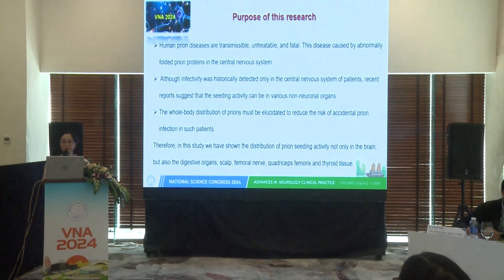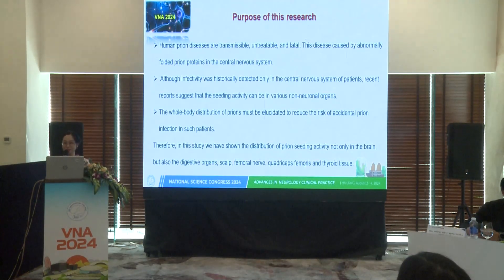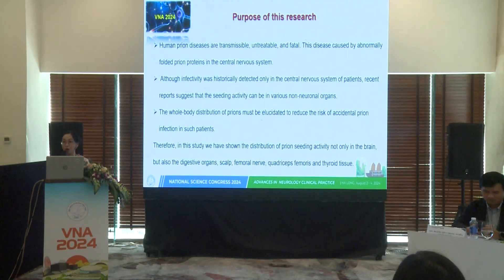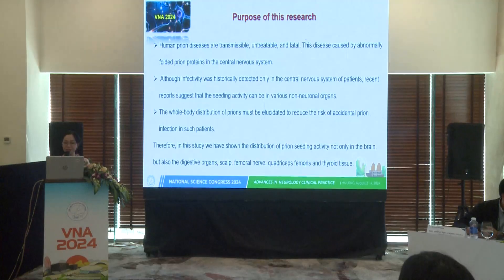The purpose of this research: human prion disease is transmissible, untreatable, and fatal, caused by abnormal prion protein in the central nervous system. Although infectivity was historically detected only in the CNS, some research has shown that seeding activity can be detected in various non-neuronal organs. The whole-body distribution of prions must be elucidated to reduce the risk of accidental prion infection in such patients.